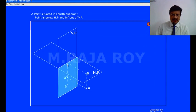4th quadrant means this is in front of VP and below the HP, somewhere here. So when the 1st quadrant is opened, automatically 2nd quadrant is closed and the 4th quadrant will also be closed.